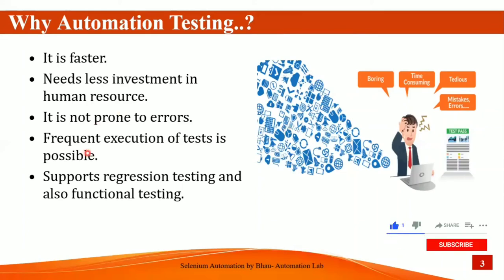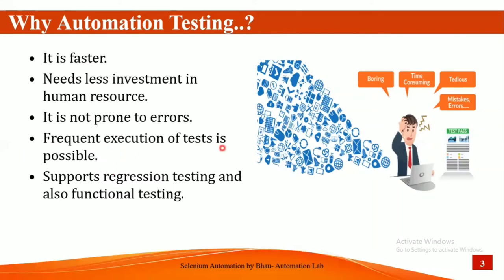But in automation testing, if you want to run 500 test cases again and again for a month or even a year, it will produce the same results — if a test case fails it shows fail, if it passes it shows pass. Frequent execution is possible, and automation supports regression testing and functional testing. After any module change, automation testing is more helpful as it saves time and human resources.